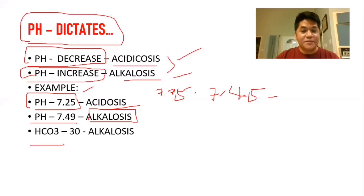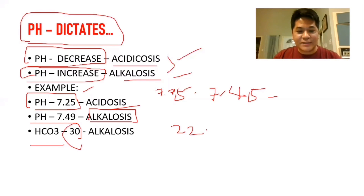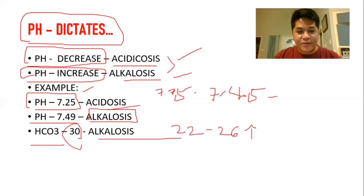The bicarbs normal range is 22 to 26. If bicarbs increase above that, it turns alkalotic. If bicarbs decrease below that, it turns acidosis.